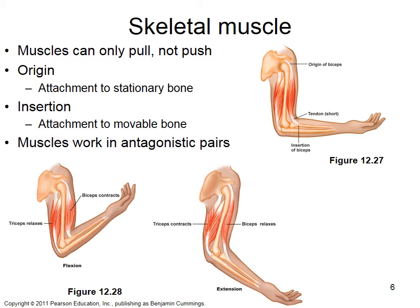Muscles can only pull, not push, so they're set up in antagonistic pairs. The origin attaches to the stationary bone and the insertion attaches to the mobile bone. Biceps and triceps work in antagonistic pairs, as do quadriceps and hamstrings. These four muscles — biceps, triceps, quadriceps, and hamstrings — are the ones used in exam questions.